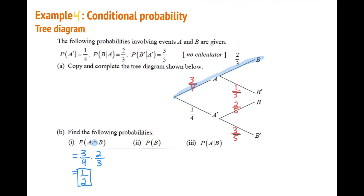Part b: find P(B). B occurs on two branches: A-and-B, or not-A-and-B. We add both together: P(B) = (3/4 × 2/3) + (1/4 × 2/5). Simplifying in the calculator gives P(B) = 3/5.